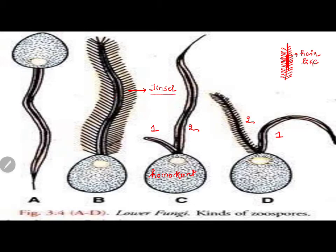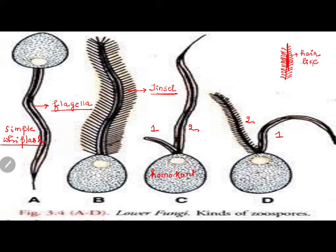If I have a plain flagella which does not have hair-like structures, we call it simple, or I also call it whiplash, because it is like a smooth long structure like a whip. So if it does not have hair-like structures it is smooth, or whiplash. If it has hair-like structures on one side or on both sides, I call it tinsel.